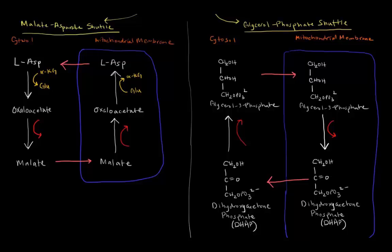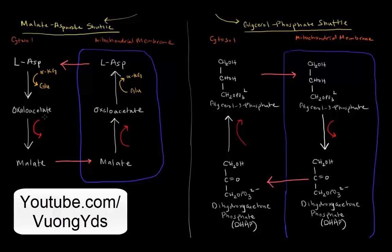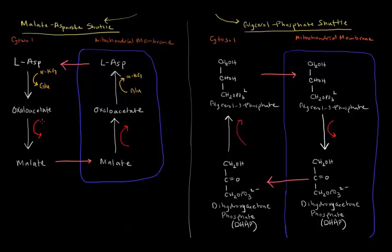What is important is that once we have oxaloacetate in the cytosol, that will be turned into malate. And when we do that, we're going to take an NADH and reoxidize it to NAD+. The reason we do that is because now malate is carrying those electrons. Malate can actually cross the mitochondrial membrane and carry those electrons into the mitochondria.